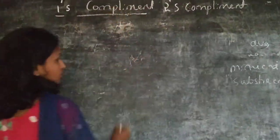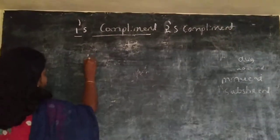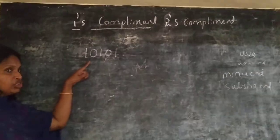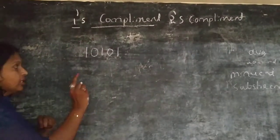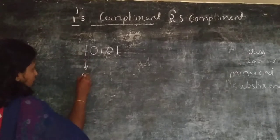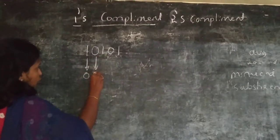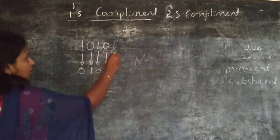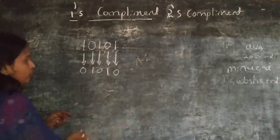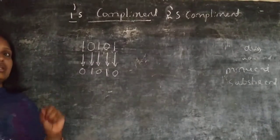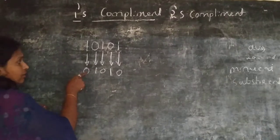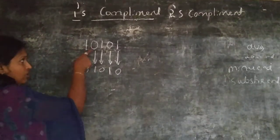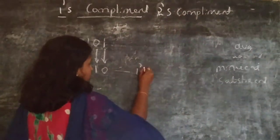1s Complement. So what do you mean by 1s Complement? Let me take any binary number — let us say it is 10101. So this binary number should be converted into 1s Complement. Instead of 1 you should take 0, and instead of 0 you should take 1. Therefore, 1s Complement of a binary number is defined as the number where 1 is replaced by 0 and 0 is replaced by 1. So this is 1s Complement.